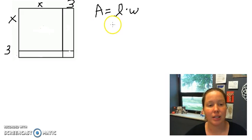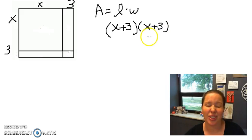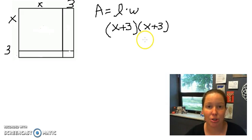Look at this length and I see that this length is x plus 3, and we're going to multiply by the width of the entire thing and we see that the width of that entire thing is x plus 3. So if we were going to give the area of the whole thing we'd want to go ahead and multiply the length times the width.